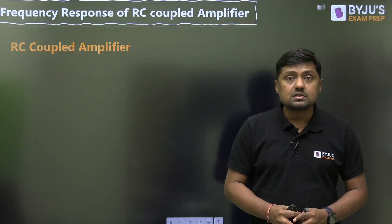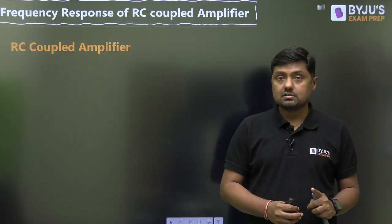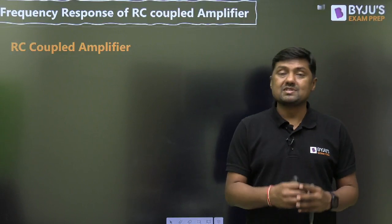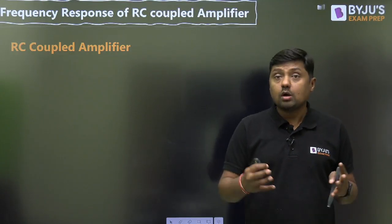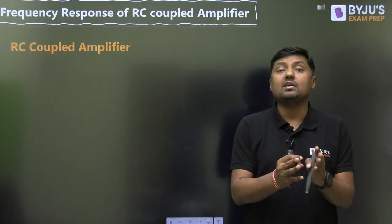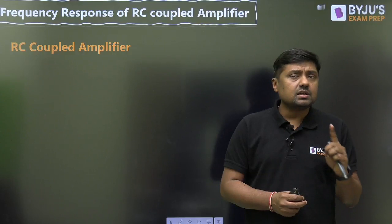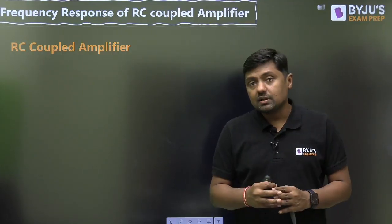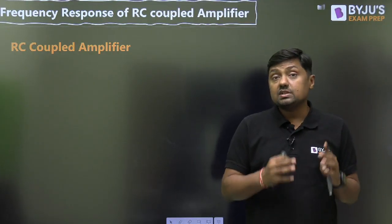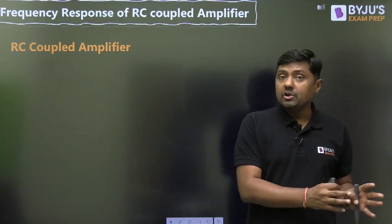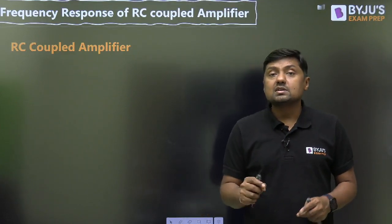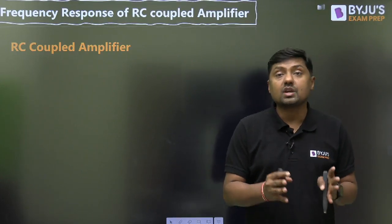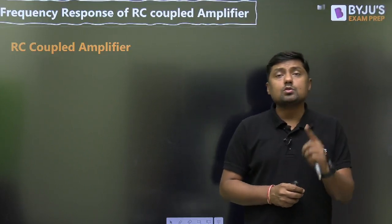Why do we have the internal capacitance? Once the junction is forward biased, there will be diffusion capacitance. Once the junction is reverse biased, there will be transition capacitance. And there may be wiring capacitance or other stray capacitance, because the size of the components is very very small. Normally the transistor is in the active region — emitter junction forward biased, collector junction reverse biased — meaning diffusion capacitance as well as transition capacitance.